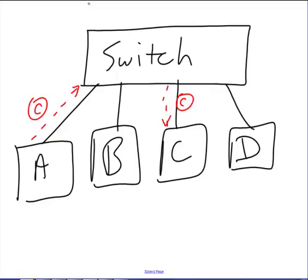What this does is it leaves other links available to do some transfer. So in theory, while A is sending to C, B could also send to D. Let's do that in a different color. At the same time because those links are not in use.